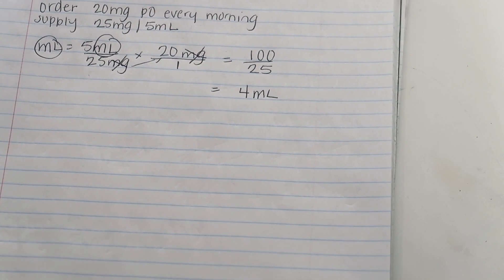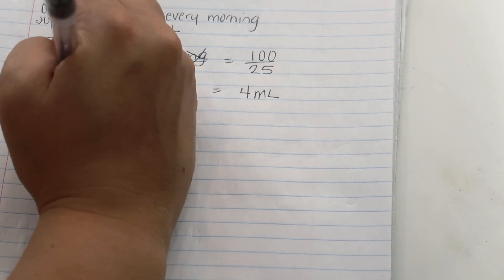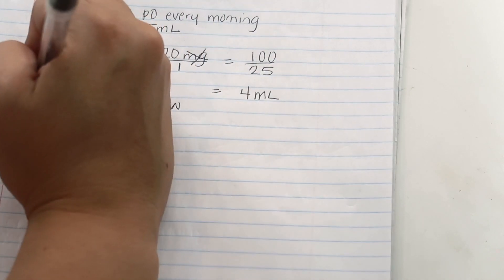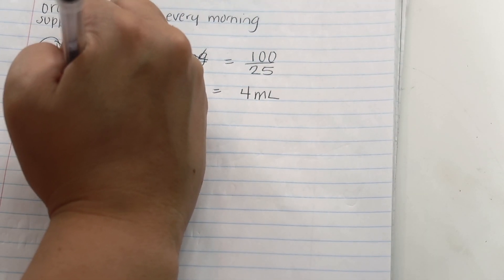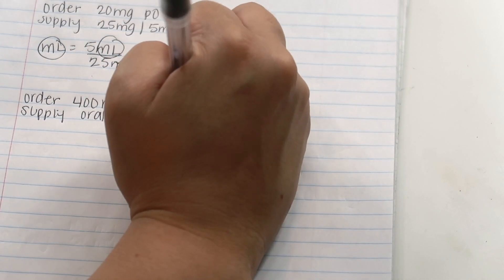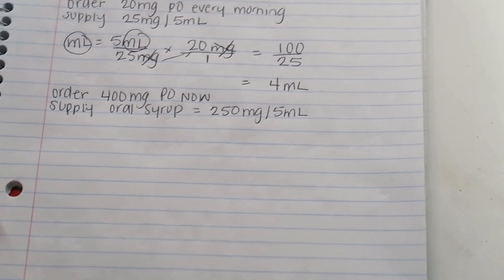The next question: the prescription reads the patient needs valproic acid 400 milligrams by mouth. The pharmacy sends up valproic acid oral syrup, which equals 250 milligrams per 5 milliliters. How much valproic acid will you give? Our order is 400 milligrams PO, and our supply is oral syrup at 250 milligrams per 5 milliliters.